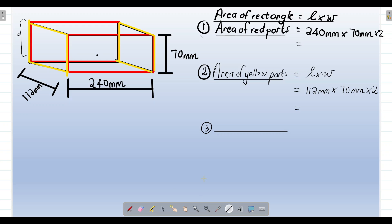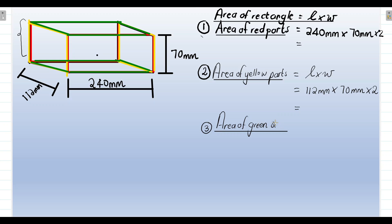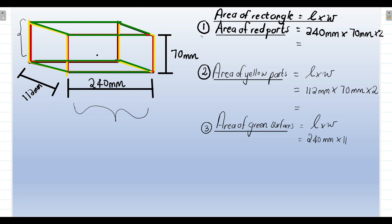Finally, the green faces are the top and bottom surfaces. The area of the green surface equals length times width. The longest side is 240 millimeters and the width is 112 millimeters. Since there are two green surfaces, we multiply by two: 240 × 112 × 2.